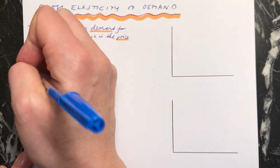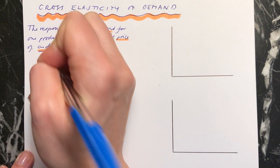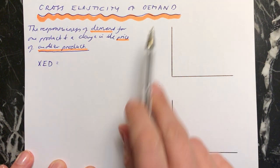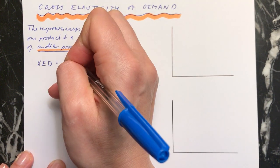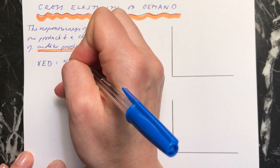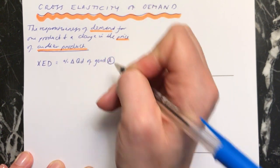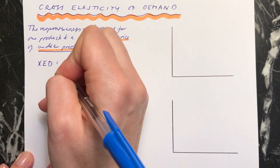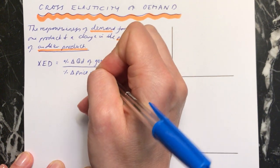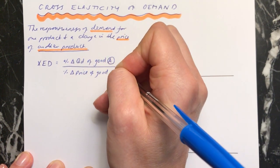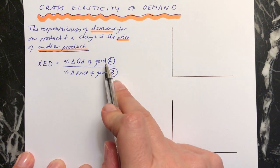The formula for this one is written as XED, that's the shorthand for cross elasticity of demand, and remember that demand or supply always goes on the top line. So it's the percentage change in quantity demanded of good A, whatever that good is, divided by the percentage change in the price of good B. So we're looking at two separate products. That's very important.